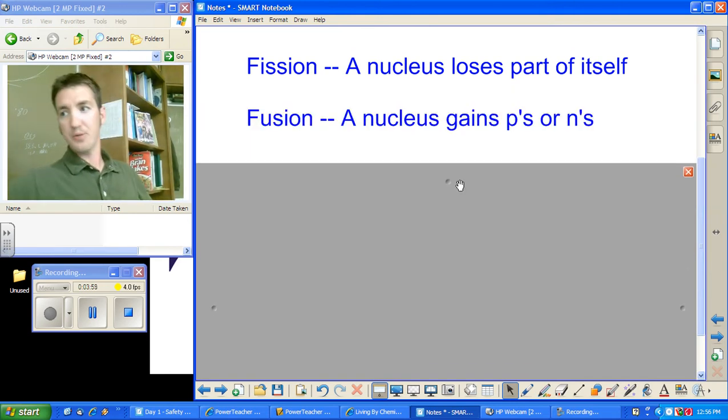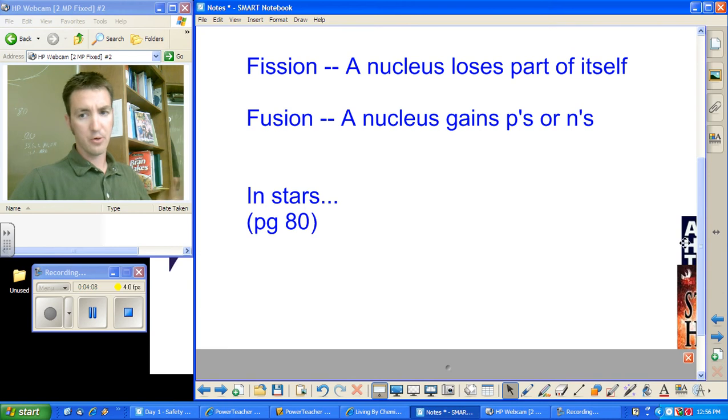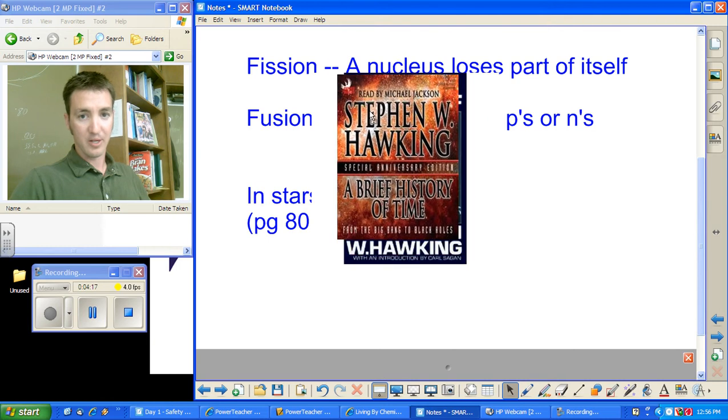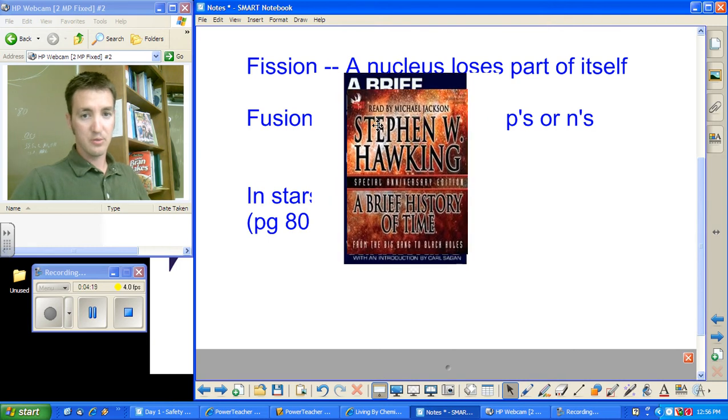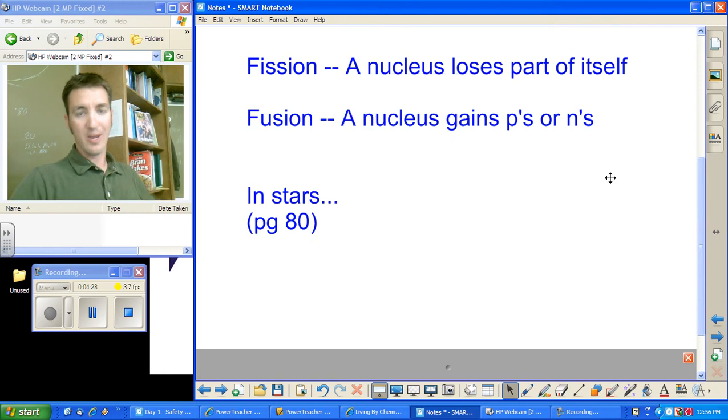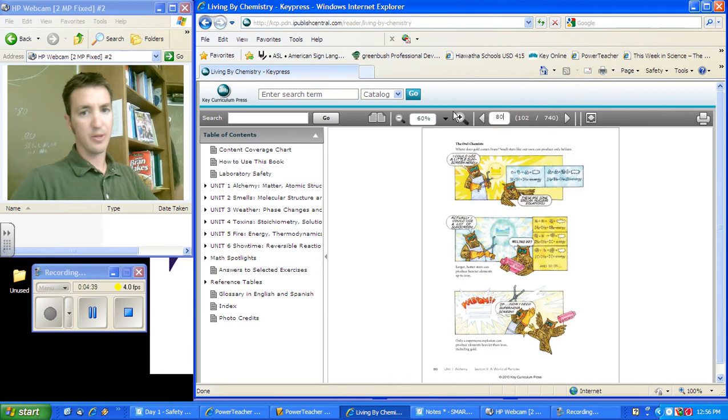Fusion is a nucleus gains or loses protons. We'll look at that. We'll look at stars. Okay, so for a good example of, or a good description of this, you can read this lovely story, A Brief History of Time. But that looks kind of lame and like from the 80s. So, it looks more exciting with this picture. That's not the Michael Jackson you're thinking of who reads it. Basically, all the atoms that we have on Earth came from exploding stars. So, in your textbook, page 80 looks at this.